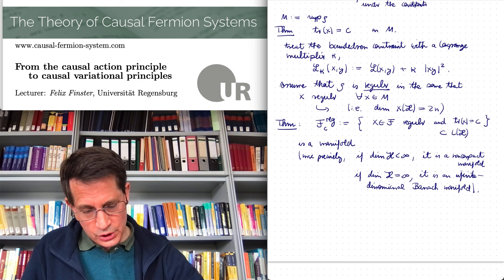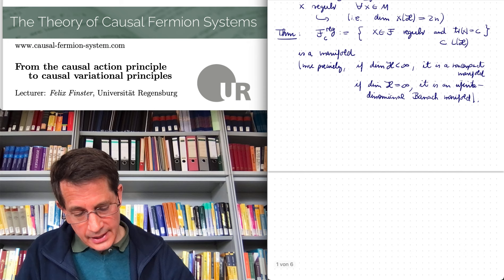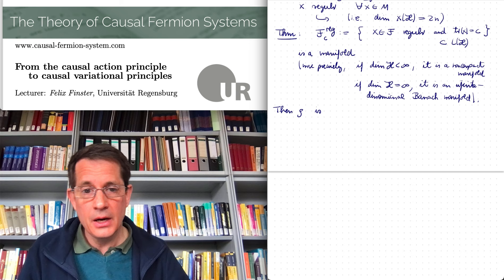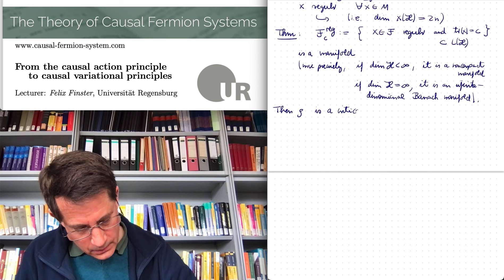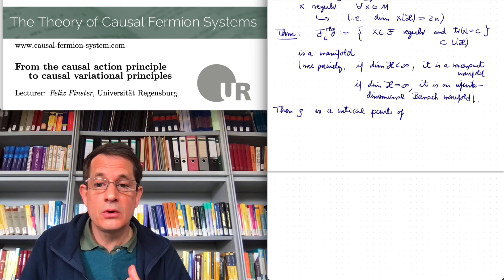But then we can say that rho is a minimizer, or at least a critical point, of a causal variational principle.